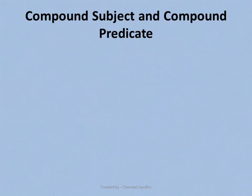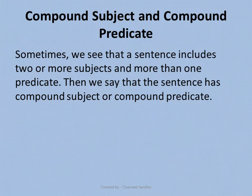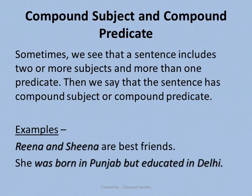Moving on, let us discuss one more concept related to the same topic: compound subject and compound predicate. Sometimes a sentence includes two or more subjects or more than one predicate — then we say the sentence has a compound subject or compound predicate. For example, 'Reena and Sheena are best friends.' The compound subject here is Reena and Sheena, because we are talking about two people.